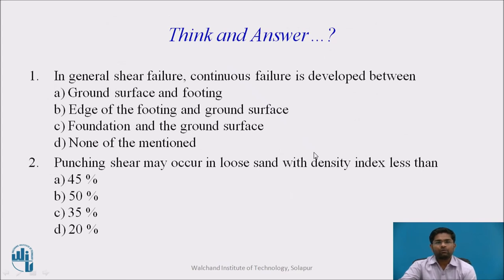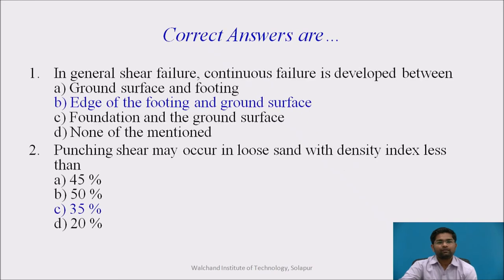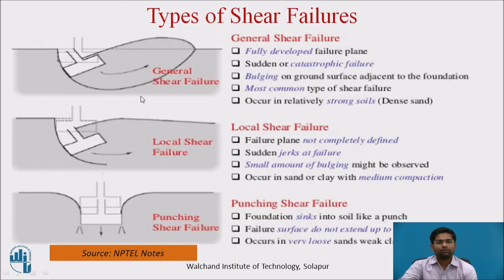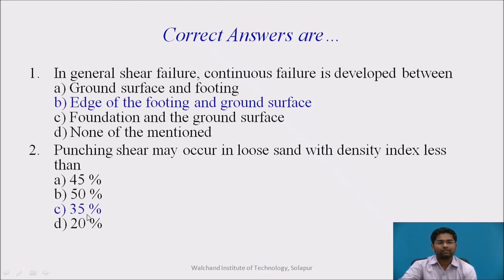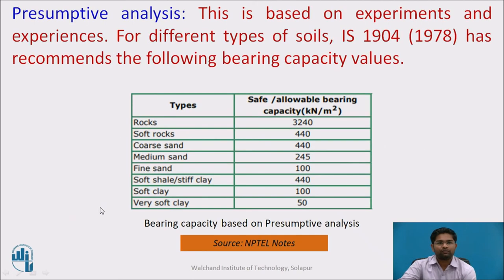Now I will pause the video for you to think and answer some questions. The correct answer for the first question is 'edge of footing to ground surface.' For the second question, 35% density index is the correct answer — if it is less than 35%, it is for punching shear failure.